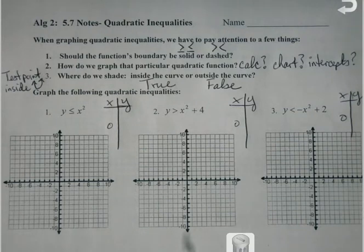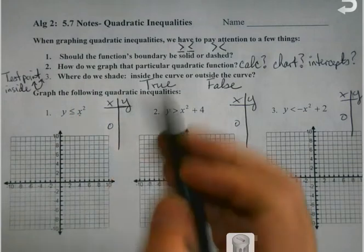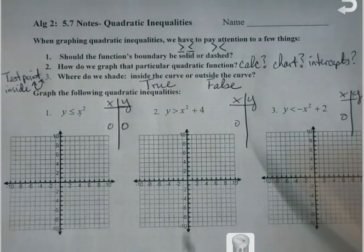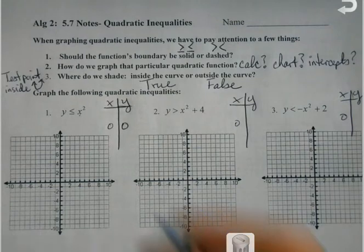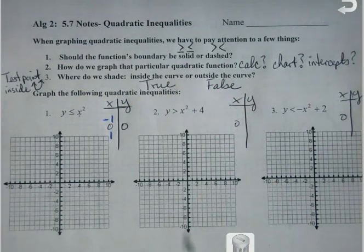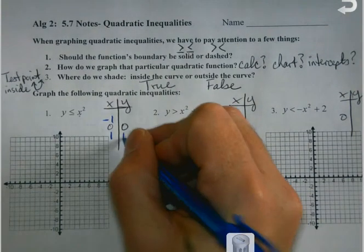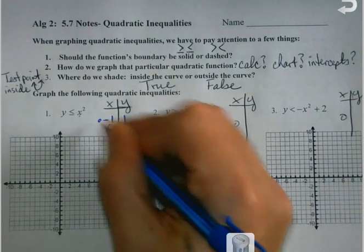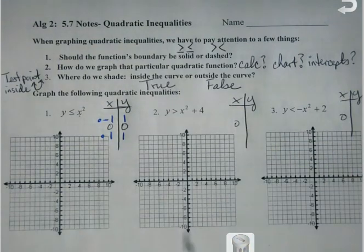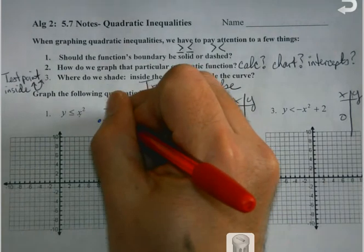Once I get that 0 in, I'm plugging in 0 for x and whatever I get out is y. Well, 0 squared is 0. Then to build out from there, because I want several points — one to the left and one to the right. 1 squared is 1, and these will always be the same, just like when we first started graphing parabolas. 2 squared is 4, and I'll see the symmetry.